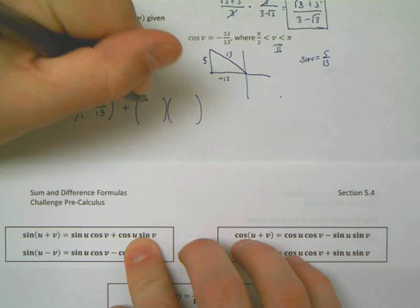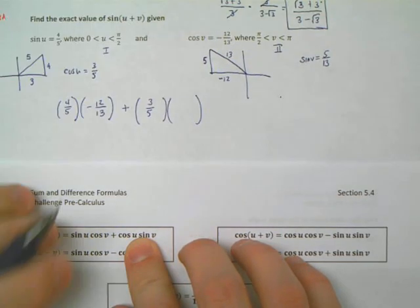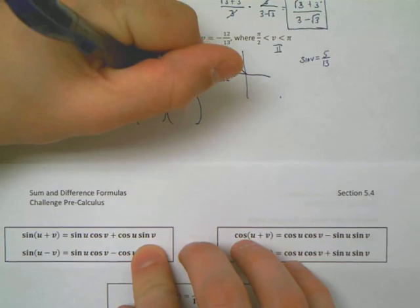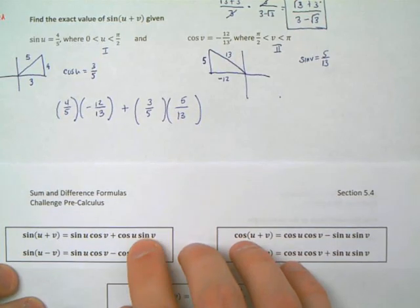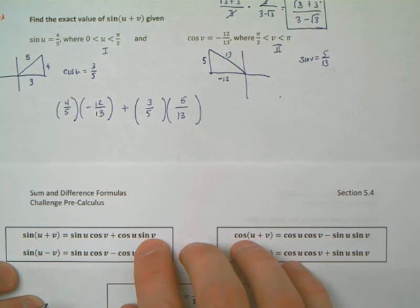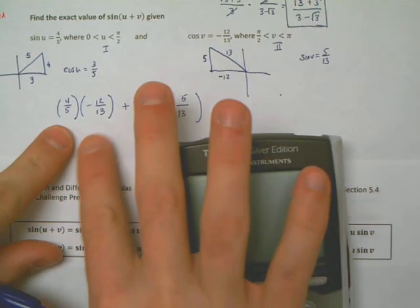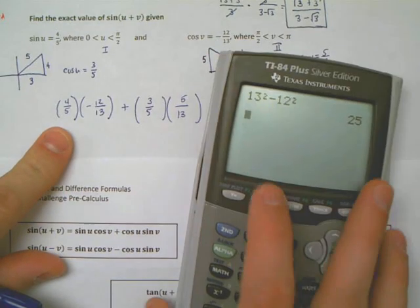is 4/5 times the cosine of v, which I have, is negative 12/13. That is plus the cosine of u, which is positive 3/5. We figured that out on our own. Times the sine of v, which we figured out, is 5/13. And so now all we have to do is we need to simplify this expression.